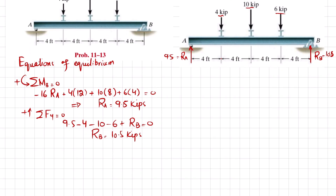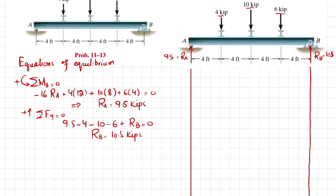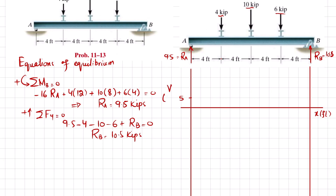Using these reaction forces, we will draw the shear force and bending moment diagrams. Taking vertical lines from each end of the beam, we draw the shear force diagram with distance along the beam in feet and shear force in kips. Each division represents 5 kips. At point A we have 9.5 kips, and since there is no other force until the first load, the shear force remains at 9.5 kips — a horizontal line up to that point.